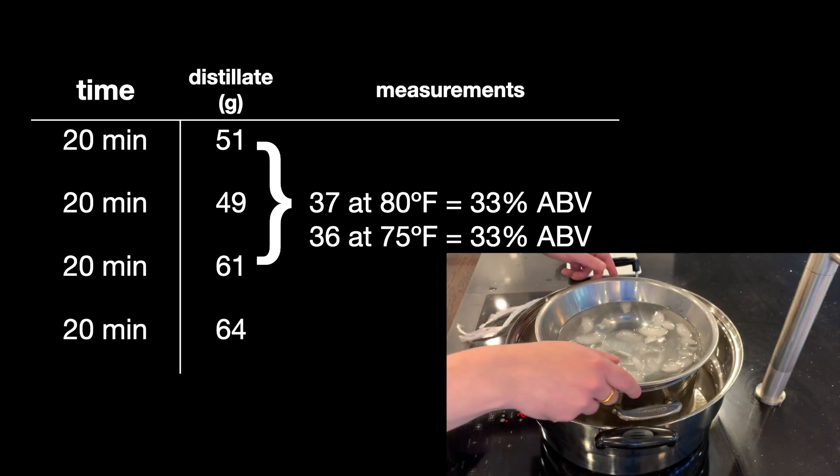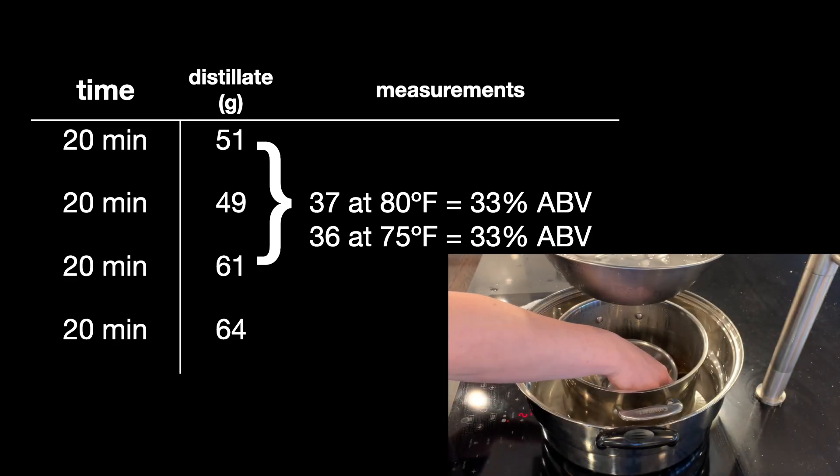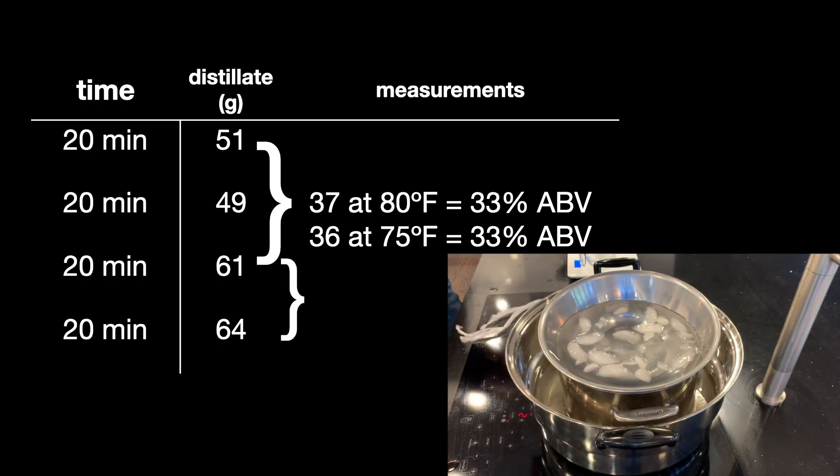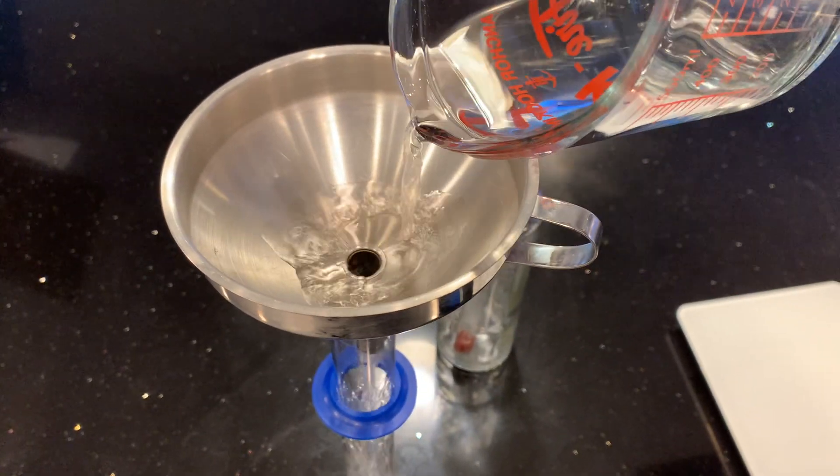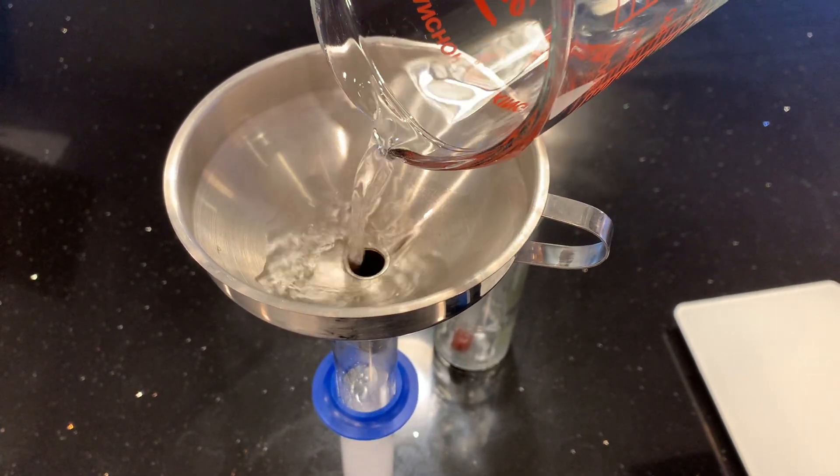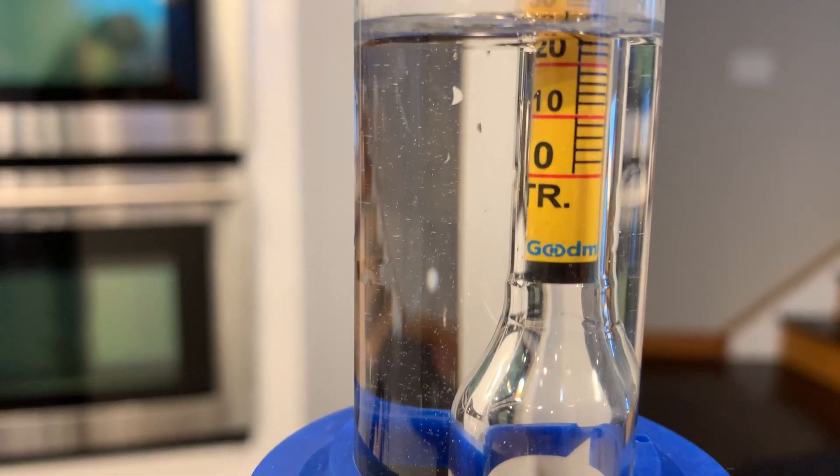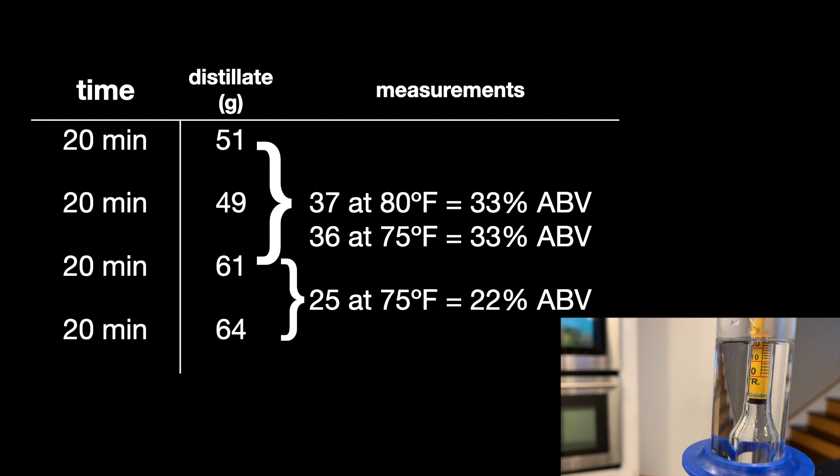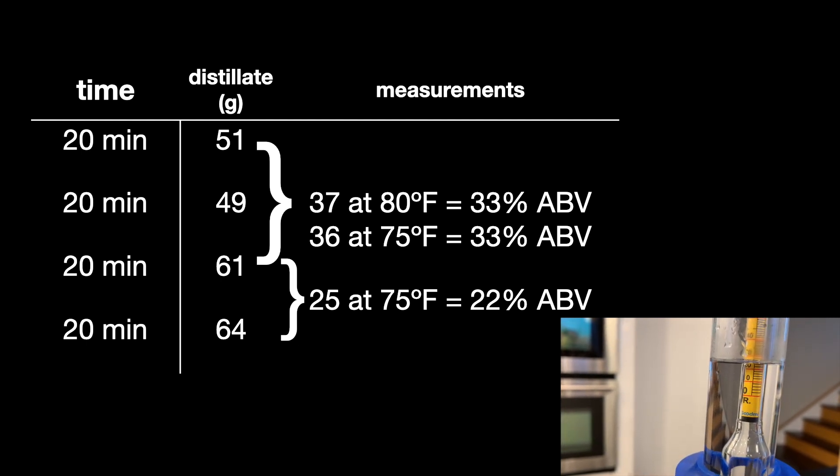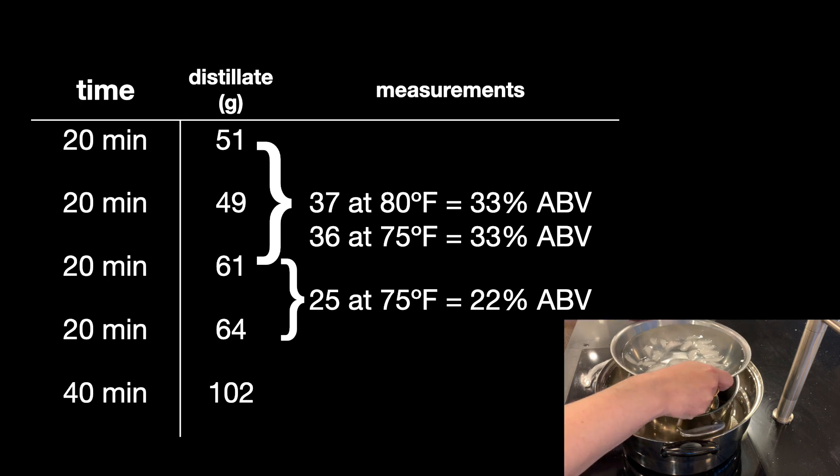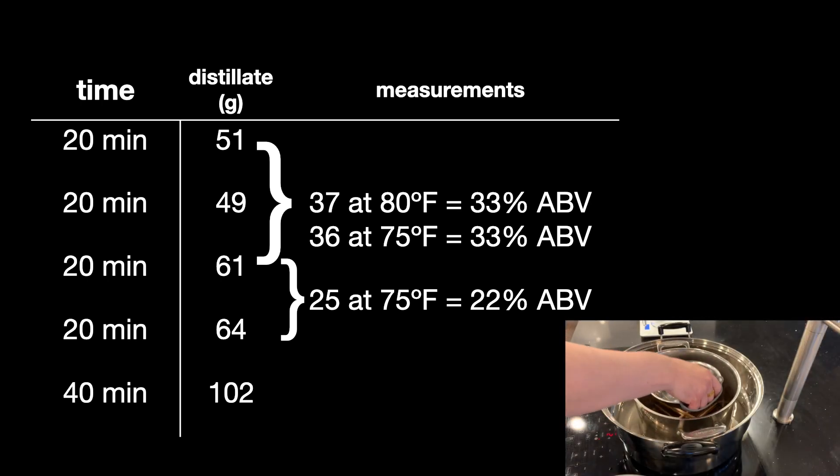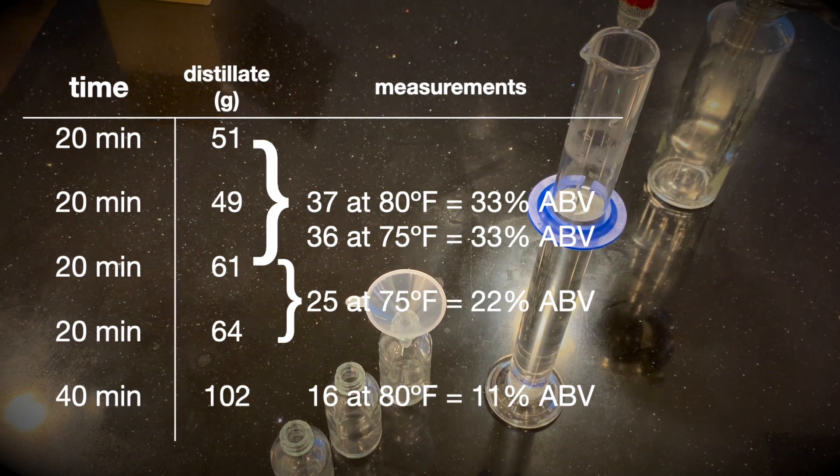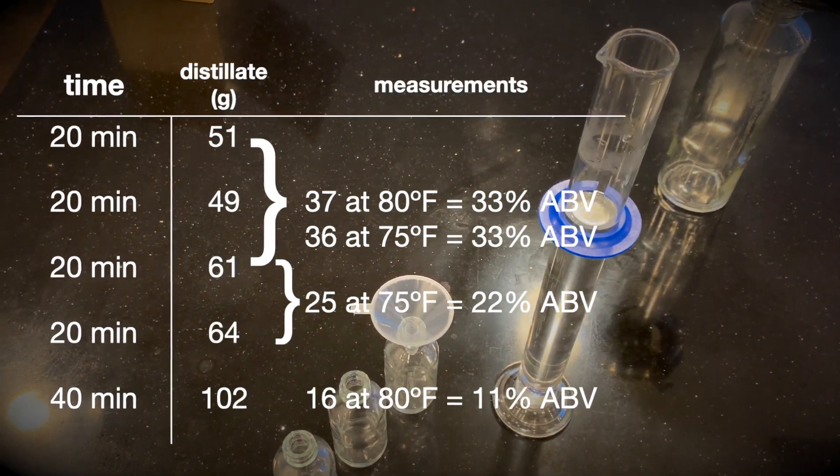But I'm going to keep on collecting distillate from my still and see. The next time I get 64 grams, and that's enough when combined with the previous one to measure again. And now the liquid is at 75 degrees Fahrenheit. And the reading I'm getting, the raw reading is 25%. So that works out to 22% ABV. So later on in the distillation process, yes, the alcohol percentage goes down. I let the still go for another 40 minutes. I collect 102 grams more. So that measurement was even lower. I got the raw measurement I saw was 16 at 80 degrees Fahrenheit, and that adjusted down to 11% ABV.